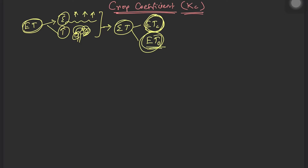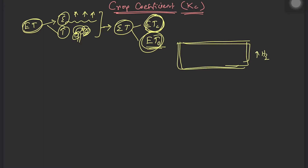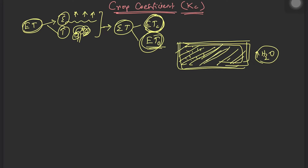Another type is reference evapotranspiration, represented as ET₀. Suppose we have an area where water is readily available and we are growing different grasses such that the total area is covered with grass canopy — actively growing grasses of around 12 to 15 centimeters height. With unlimited water supply and total ground cover by actively growing grasses, whatever evapotranspiration occurs from this place is known as reference evapotranspiration.